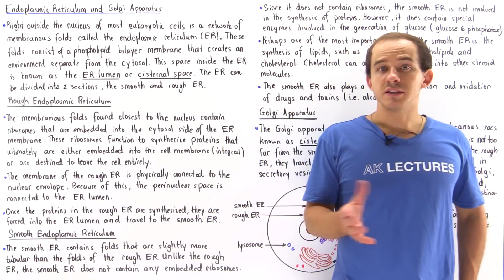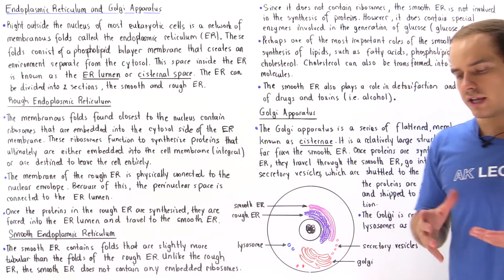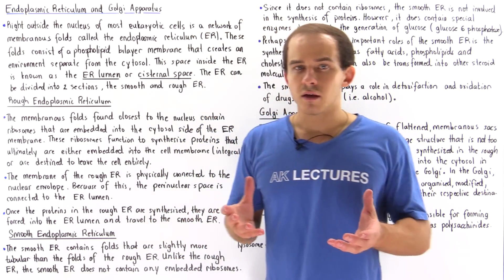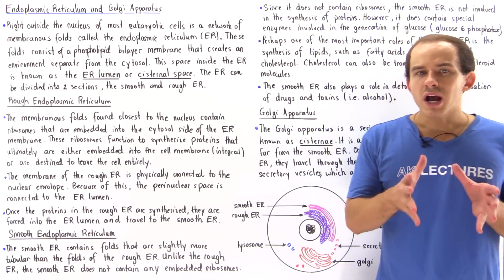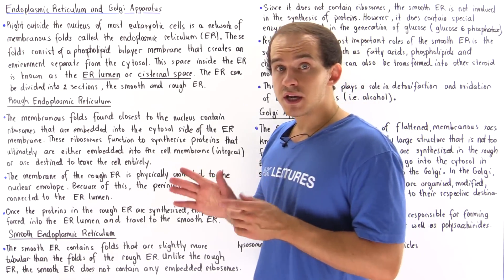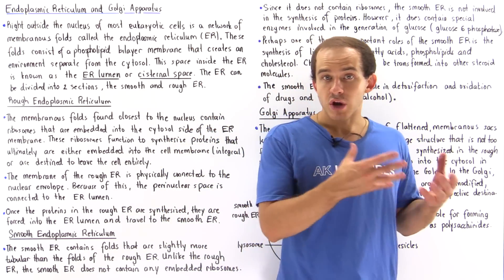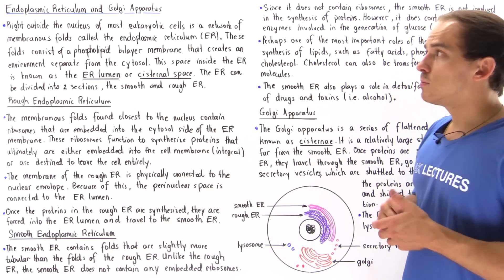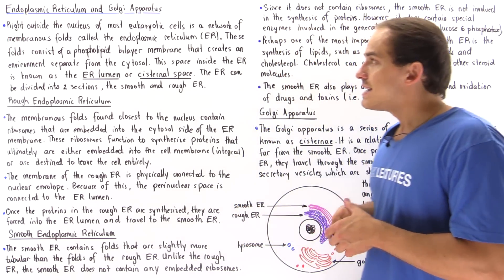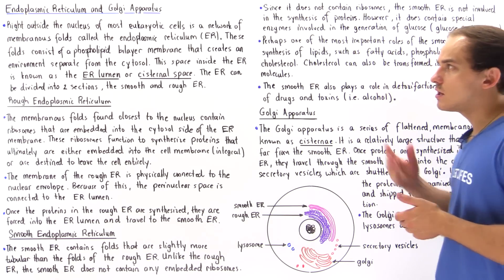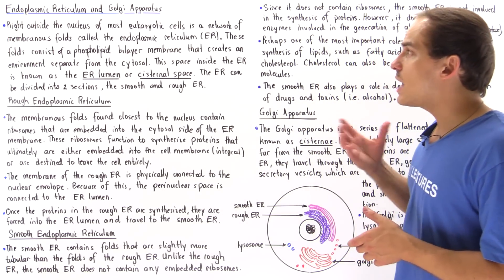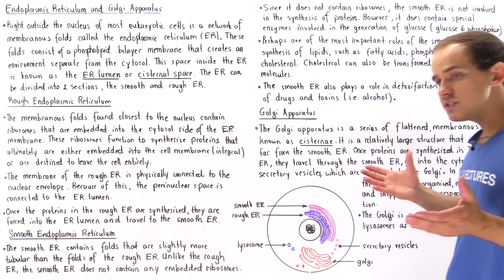Let's continue our discussion on the different types of organelles found inside eukaryotic cells and focus on the endoplasmic reticulum and the Golgi apparatus. Right outside the nucleus of most eukaryotic cells — we say most because some eukaryotic cells such as red blood cells do not contain the endoplasmic reticulum nor the Golgi apparatus — is a network of membranous folds known as the endoplasmic reticulum, or simply the ER.